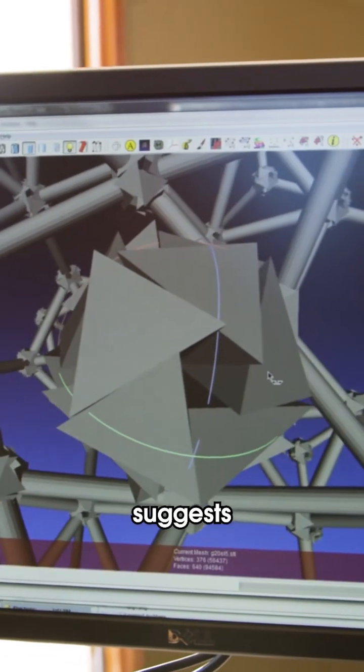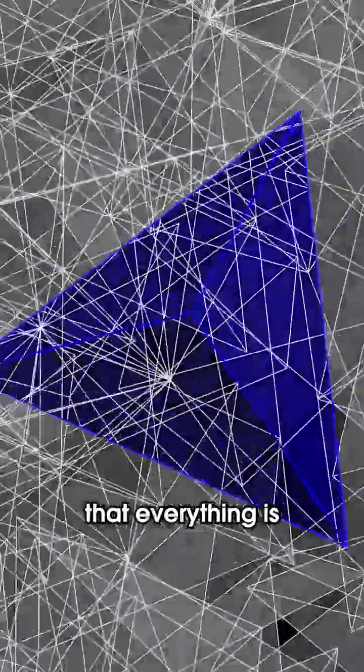Well, emergence theory suggests a three-dimensional pixel of reality, a fundamental building block that everything is built from: the tetrahedron, which is a three-dimensional equilateral triangle.